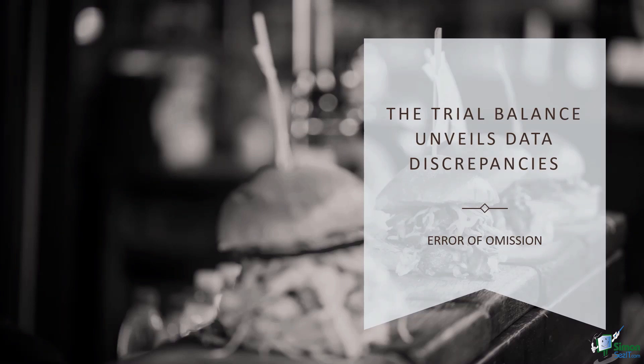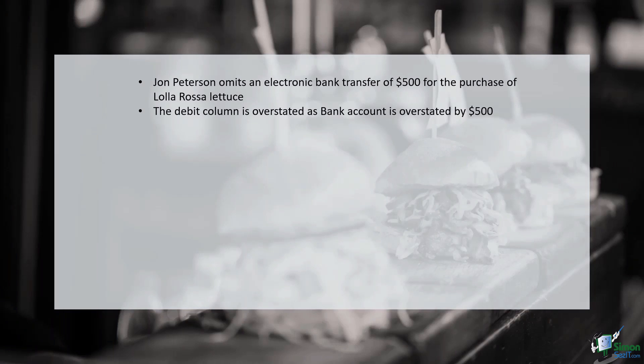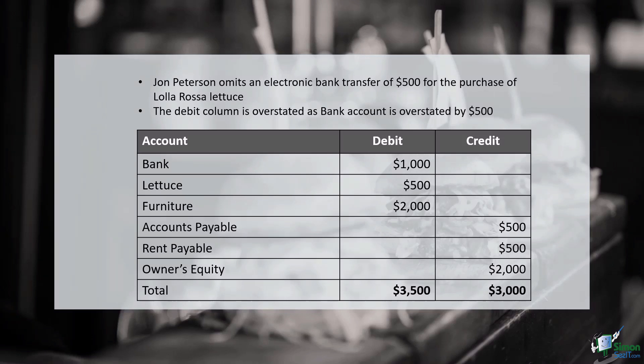The dance evolves into the next step: the accuracy check for trial balance and general ledger. As guardians of financial integrity, accountants stand vigilant against the specter of errors. The trial balance, once a compass, now transforms into a magnifying glass, revealing subtle discrepancies in the financial narrative. Consider John Peterson, Sandmart's diligent accountant, working tirelessly on the financial statements. In the rush of data transfer from source documents to the general ledger, a $500 electronic bank transfer for Lola Rosa letters goes unnoticed. The trial balance, when unveiled, exposes this omission, underscoring the importance of thoroughness in the bookkeeping process.